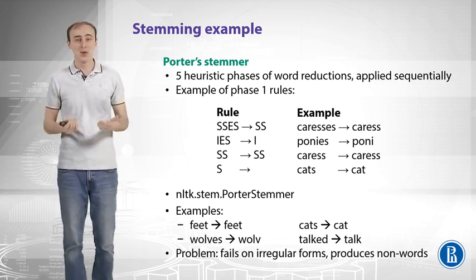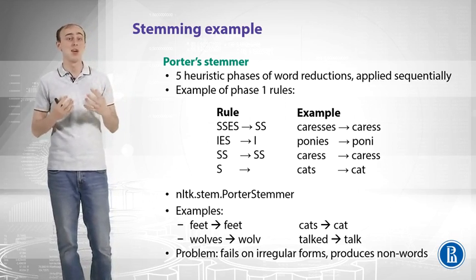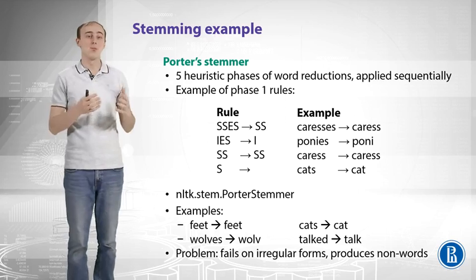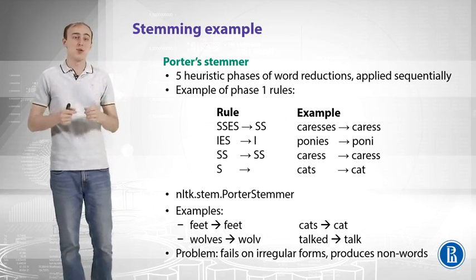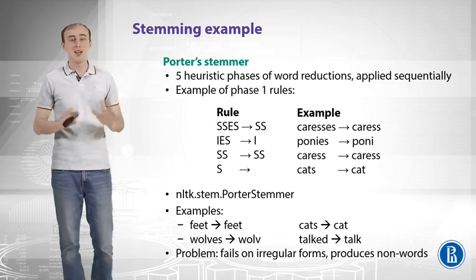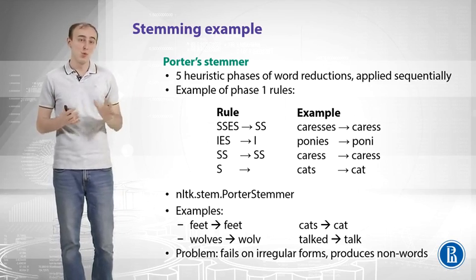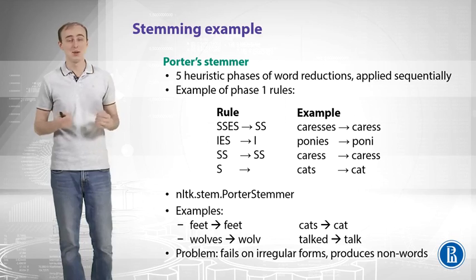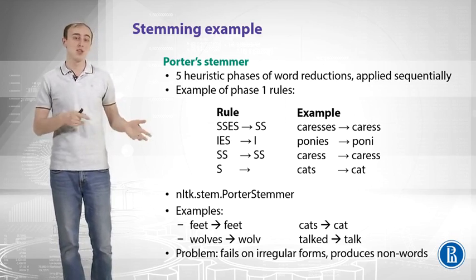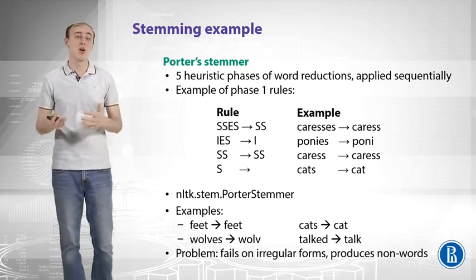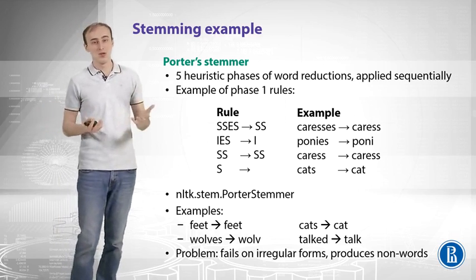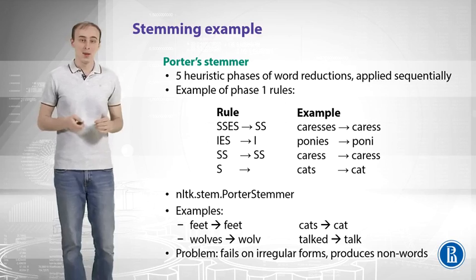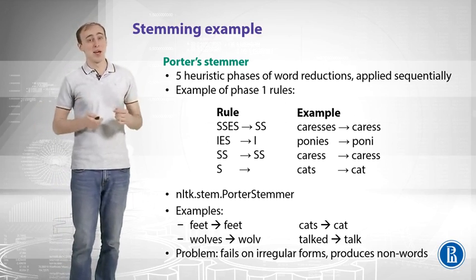Looking at examples: for 'feet,' Porter's stemmer produces 'feet' — it doesn't know about irregular forms. For 'wolves,' it produces 'wolv,' which is not a valid word, but can still be useful. 'Cats' becomes 'cat' and 'talked' becomes 'talk.' The problems are obvious: it fails on irregular forms and produces non-words. But that may not be much of a problem in practice.